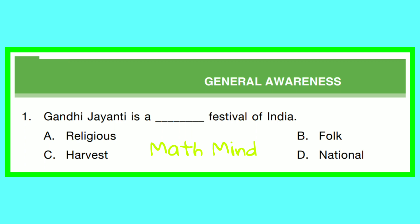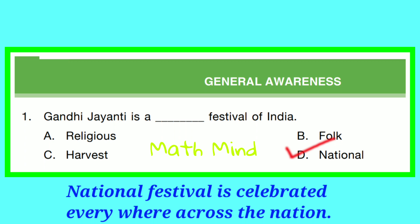General Awareness, Question No. 1. Gandhi Jayanti is a national festival of India. Option D is correct. National festival is celebrated everywhere within the nation and it is recognized by the national government. So, Option D is correct.